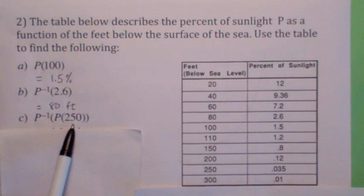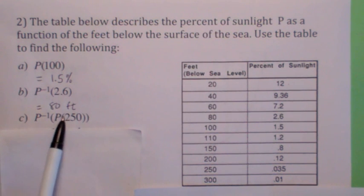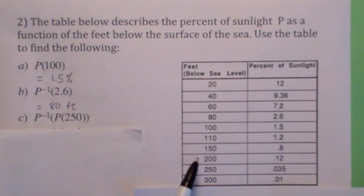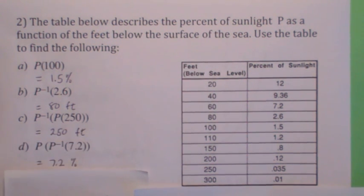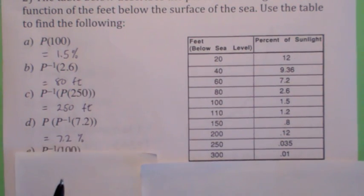What's p inverse of p of 250 feet? You should know from what we just said that's 250 feet, but you could first find p of 250 feet and get 0.035%, and then find p inverse of that, get back to 250 feet. Similarly, p of p inverse of 7.2% is 7.2%.